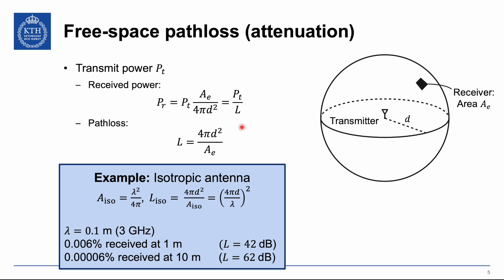Consider isotropic antennas — hypothetical antennas that radiate signals equally in all directions regardless of orientation. Their effective area A_iso equals λ²/4π, where λ is the wavelength. The path loss for an isotropic antenna is 4πd² divided by this area, giving the expression (4πd/λ)², the whole thing squared.